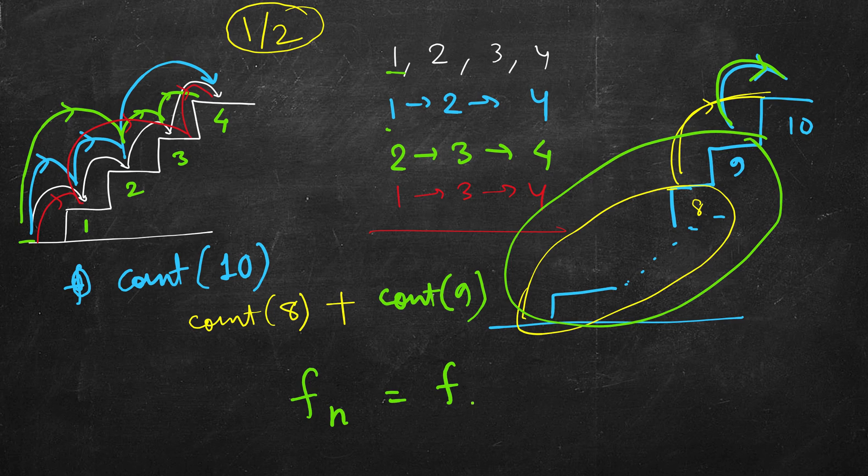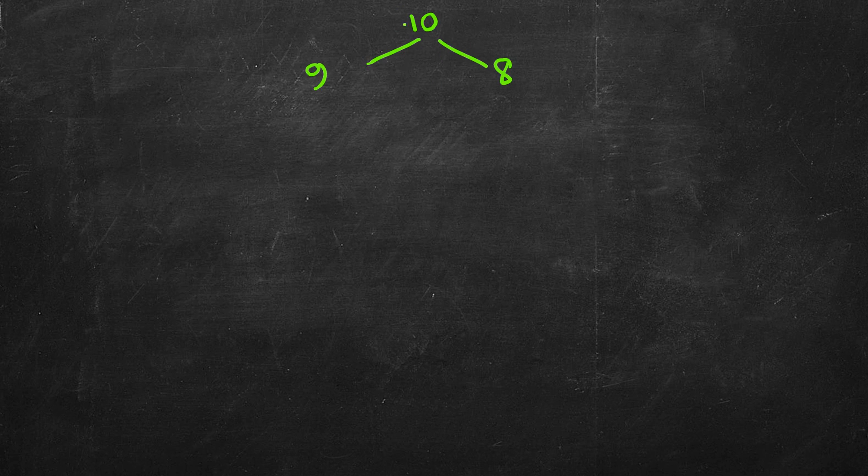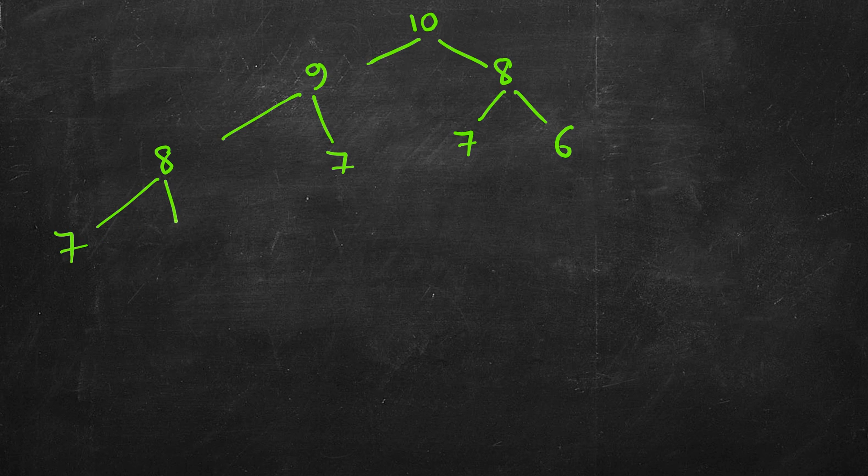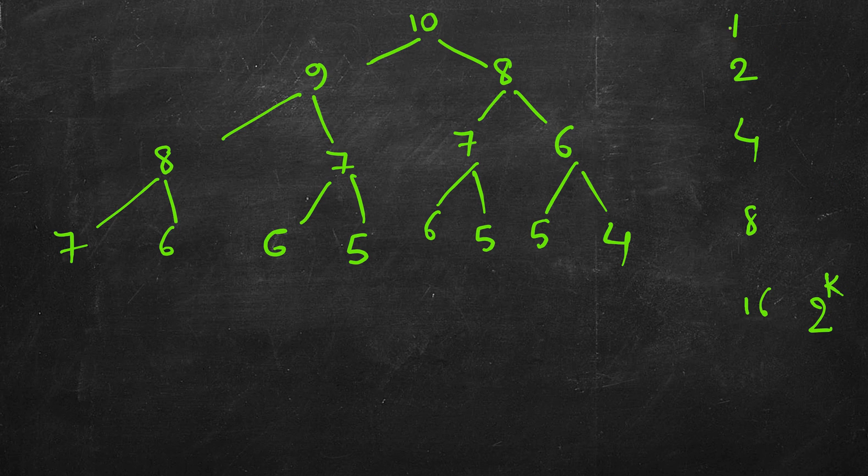Fibonacci nth number is Fibonacci of n minus 1 plus f of n minus 2. So here also if this is n, this is n minus 2, this is n minus 1. But if we do it recursively like this then let's see the recursion tree. For 10 we need 9 and 8. So we will solve for 10, 9 and 8. For 9 we will need to solve for 8 and 7, and it will keep growing. So first level 1, next level 2, 4, 8, 16. So in general 2 raised to the power level number k where k starts from 0.